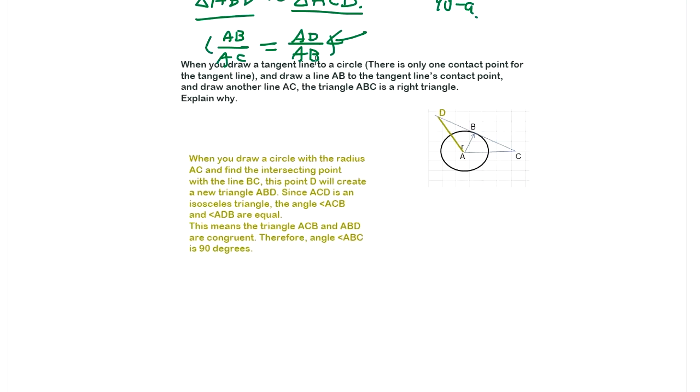When you draw a tangent line to the circle, there is only one contact point for the tangent line. And draw the line AB to the tangent line. This is the contact point. It should be perpendicular. The contact point, draw another line AC. So if you draw AC, the triangle ABC is a right triangle. Explain why.